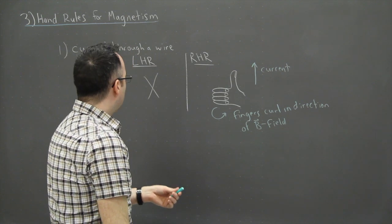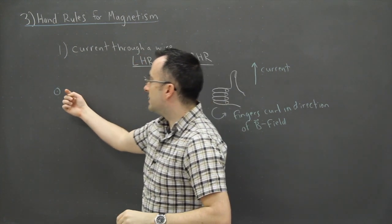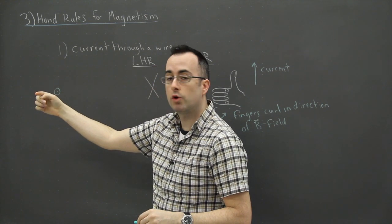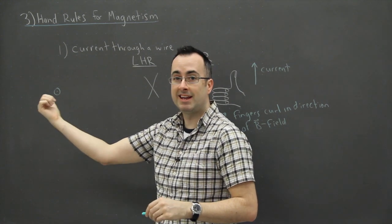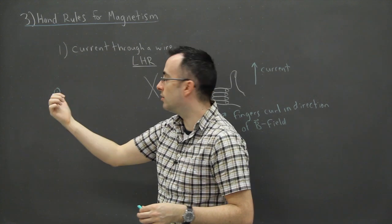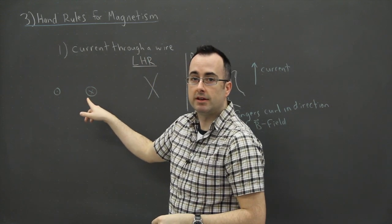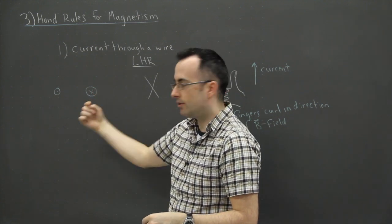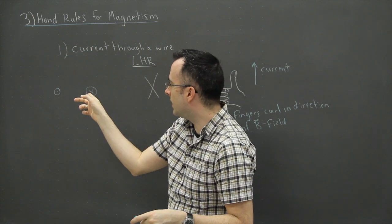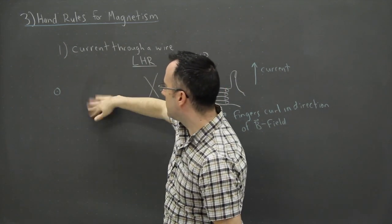For example, if I have a wire coming straight out at you, the current in the wire is going straight out of the page. The convention is to draw a little dot for out of the page, and an X if the current is going into the page. I remember this by imagining an arrow: if it's coming toward you, you see the point; if it's going away, you see the fletching, which looks like an X.